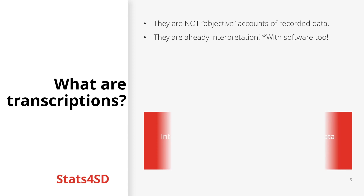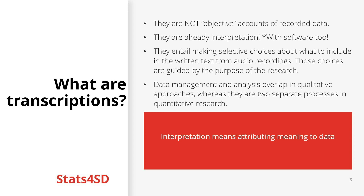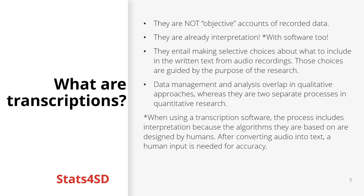And this is already a stage of interpretation where we are giving meaning to the data. We need to make these selective choices prior to starting the transcription process and they constitute an initial stage of data interpretation. These choices may also be registered in writing when working within a team in order to ensure that all team members are on the same page and as part of the rigor of the approach. The overlap between data management and analysis in qualitative approaches constitutes a main difference from quantitative data where the data management and data analysis processes are two separate ones.